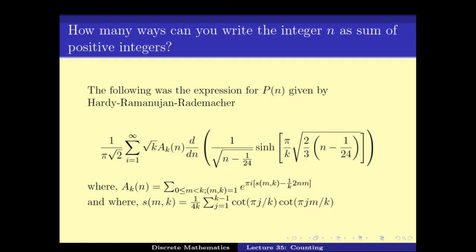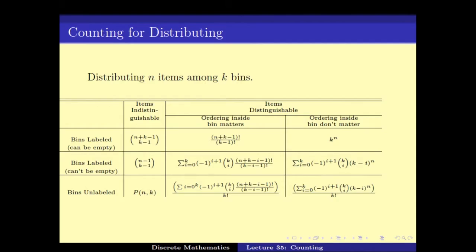A few years later, Ramanujan, Hardy, and Rademacher got an exact formula for P(n) by making some modifications to that expression. This shows how important and hard this counting problem can be — it is of such importance that great mathematicians like Srinivasa Ramanujan worked on it, and proving the formula for P(n) is considered one of his greatest works. This brings us to the end of the distribution section.